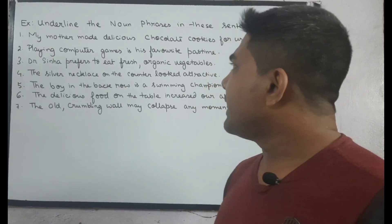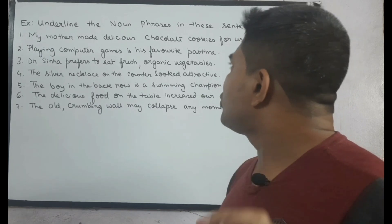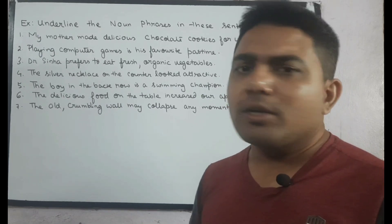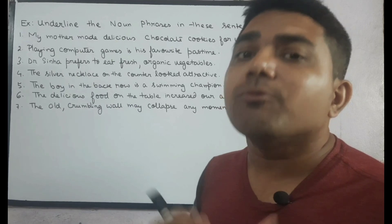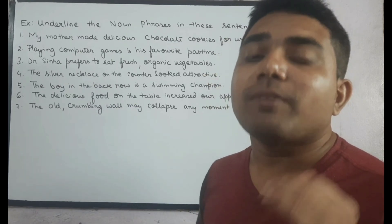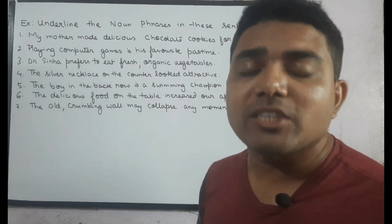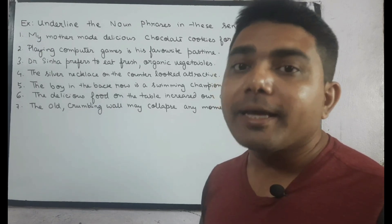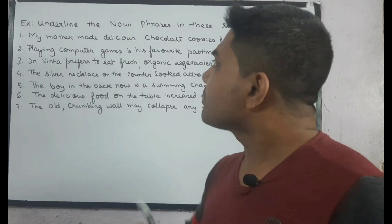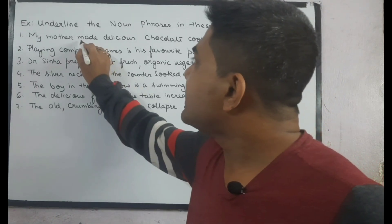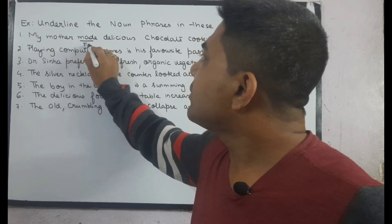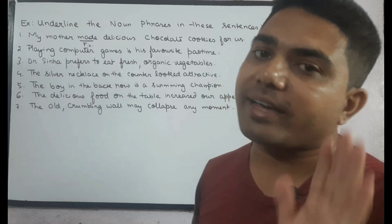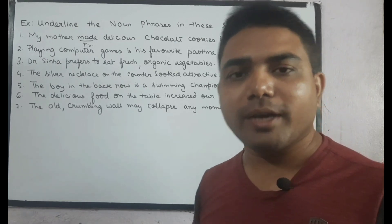Let's read sentence number one: 'My mother made delicious chocolate cookies for us.' So friends, which is the verb here? The finite verb — finite verb means a verb whose tense can be changed. The finite verb here is 'made.' I've written it in short as F.V., meaning finite verb.